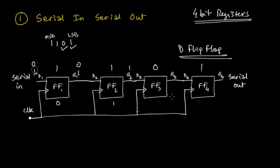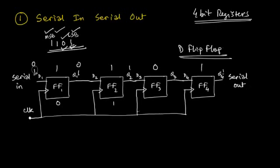To get the data out, simply use four more clock pulses. After four more clock pulses, the LSB — that is 1 — stored in flip-flop 4 first goes out on output line Q4. You'll find the entire data available as output transmitted serially: first the LSB, then 0, then the next bit, and finally the MSB sent out one by one. That's why this is called serial data transmission — that's how a serial in serial out register works.